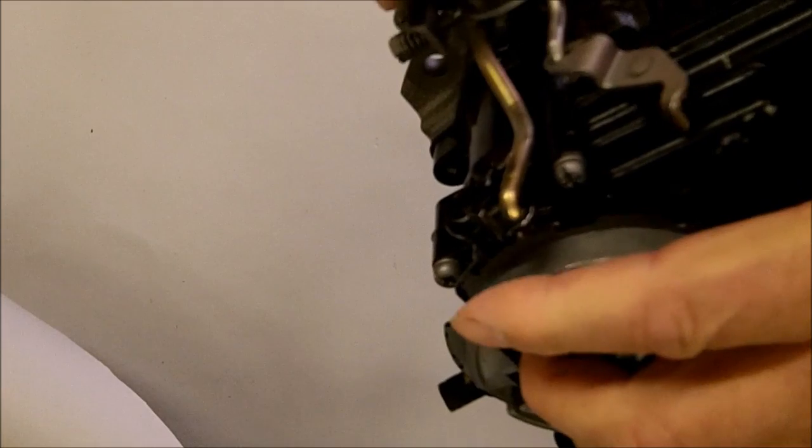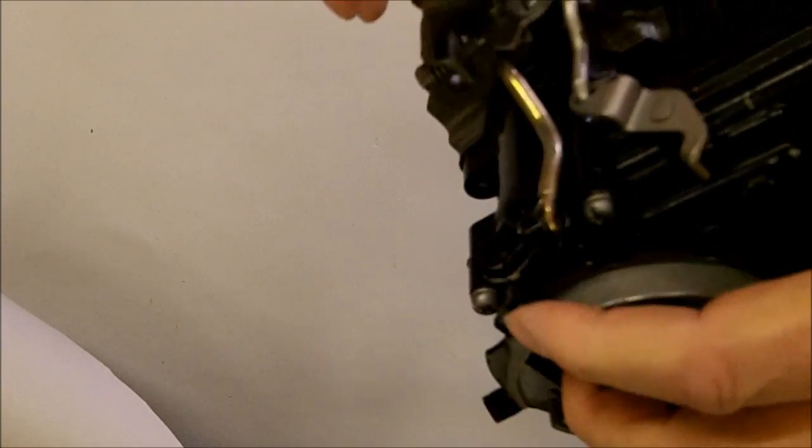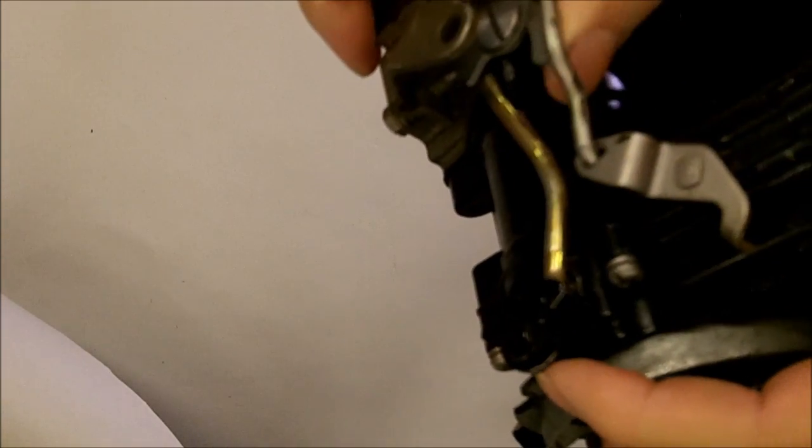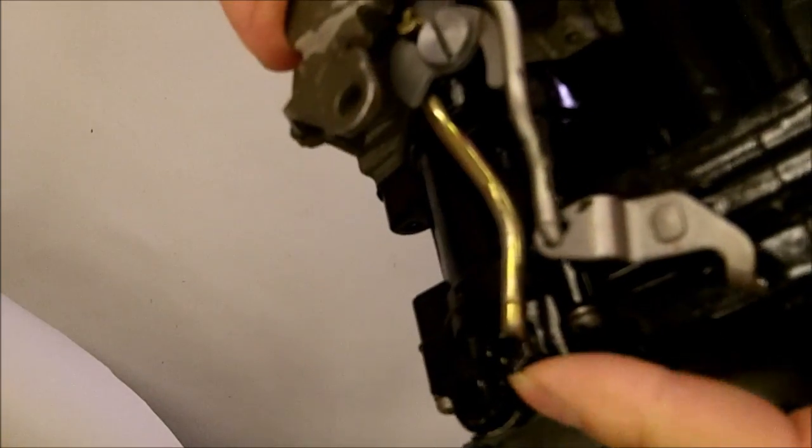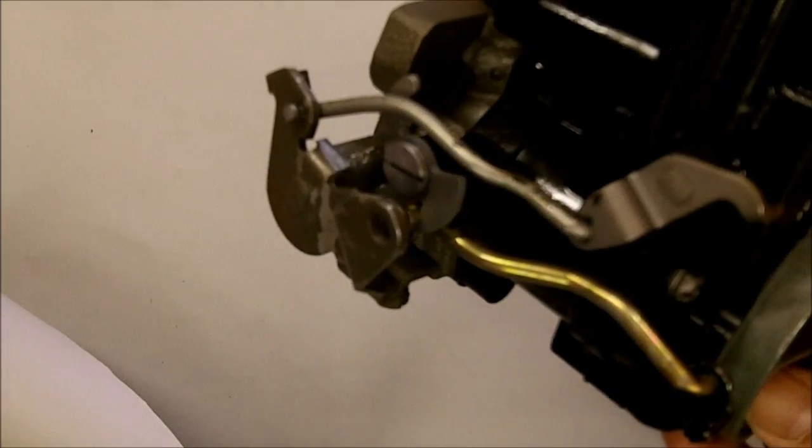When it's open and warm, your fast idle cam will be down like this on the low part. Hopefully you can see this—as I open up the choke, it's supposed to fall down, but as I close the choke when it's cold, you'll see the throttle move a little bit to the high side.